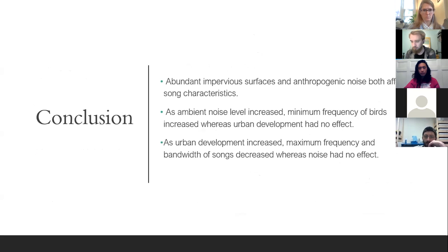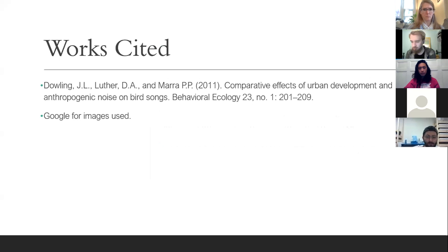These figures show how as ambient noise level increased, the minimum frequency for the study species also increased. If you look closer, you can see how the American robin, the gray catbird, and the house wren had larger increases as ambient noise level increased, whereas the northern cardinal still had an increase but it wasn't as great as the other three birds. In conclusion, the abundant impervious surfaces and anthropogenic noise both affect song characteristics. As ambient noise level increased, minimum frequency of birds increased, whereas urban development had no effect. When urban development was increased, maximum frequency and bandwidth of songs decreased, where noise had no effect.